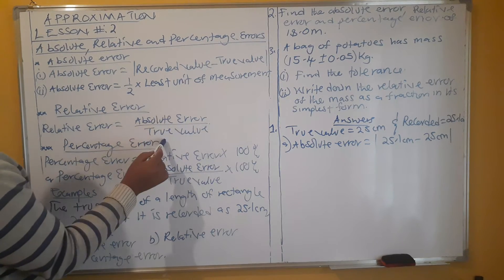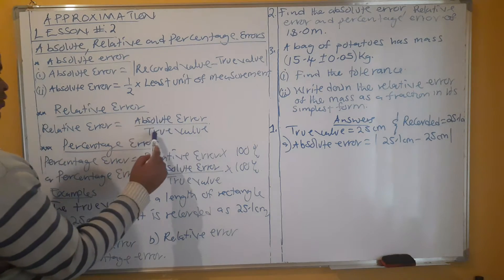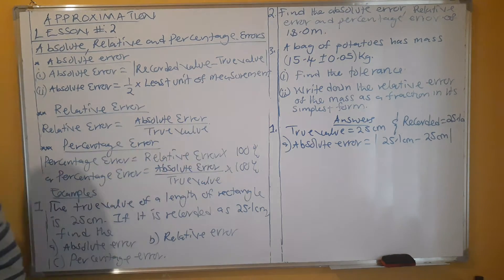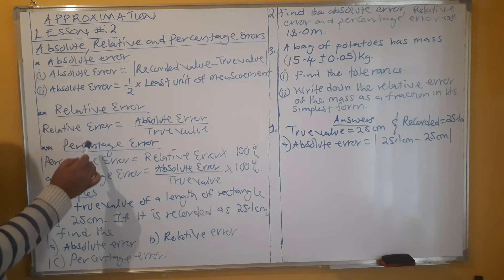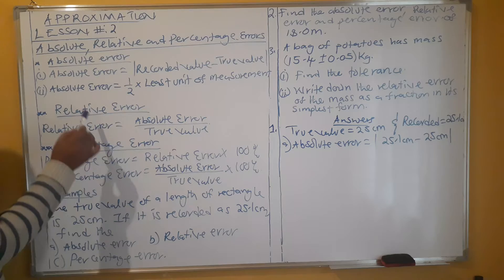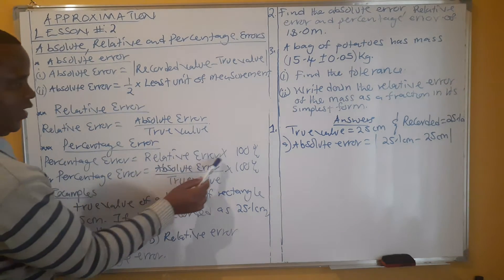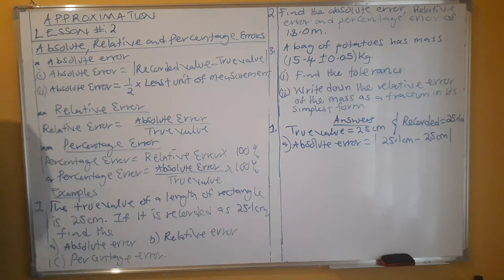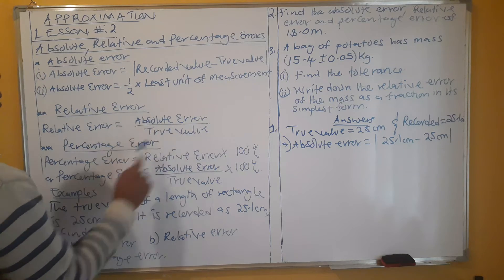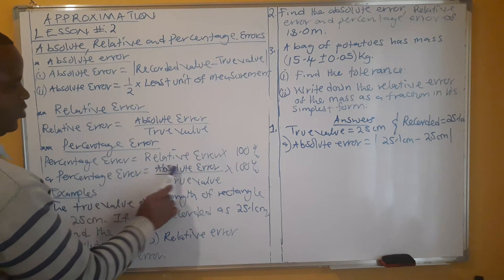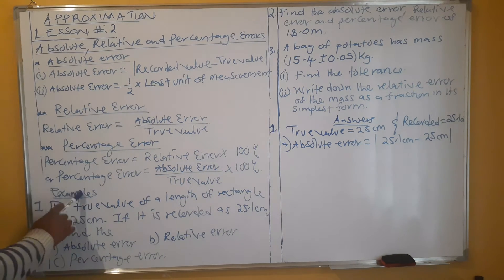Relative error is equal to absolute error over the true value. Once you have found the relative error, you can find the percentage error, because percentage error is relative error times 100%. Therefore, percentage error equals absolute error over true value, multiplied by 100%.